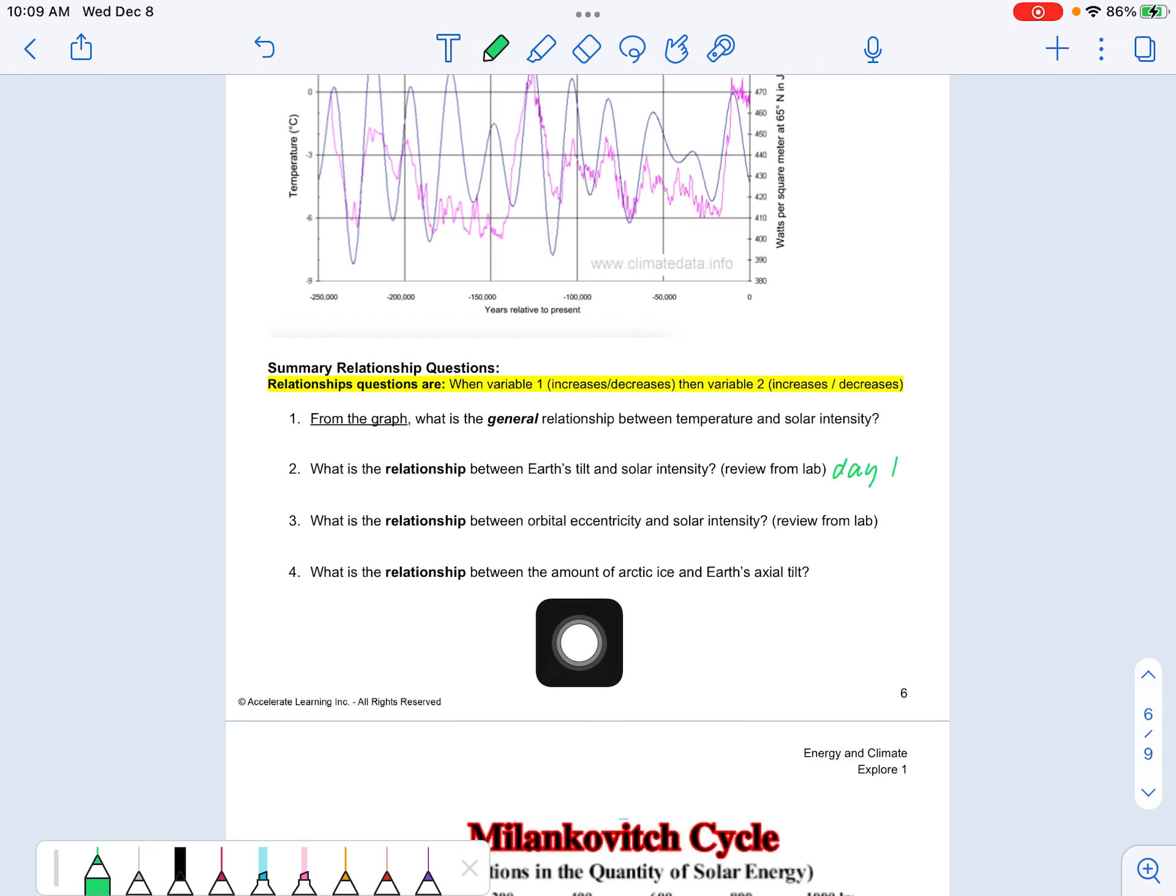And then this one isn't shown on the graph or the lab. It's just a thinking question. What's going to be the relationship between Arctic ice and tilt? So there's more ice or less ice when the tilt is like this.